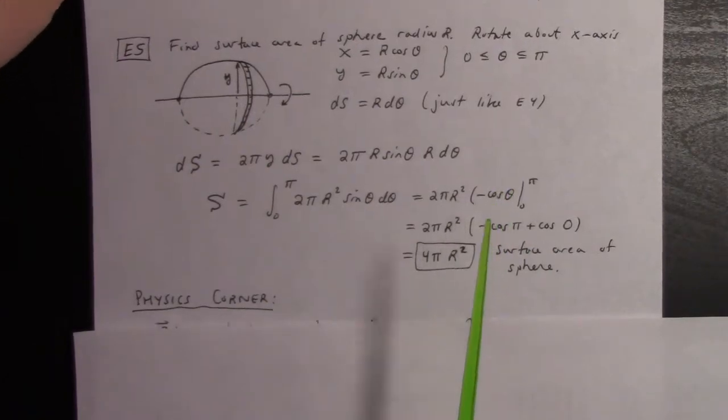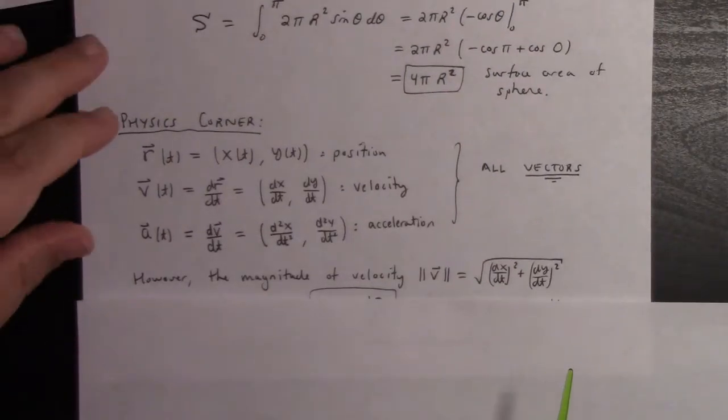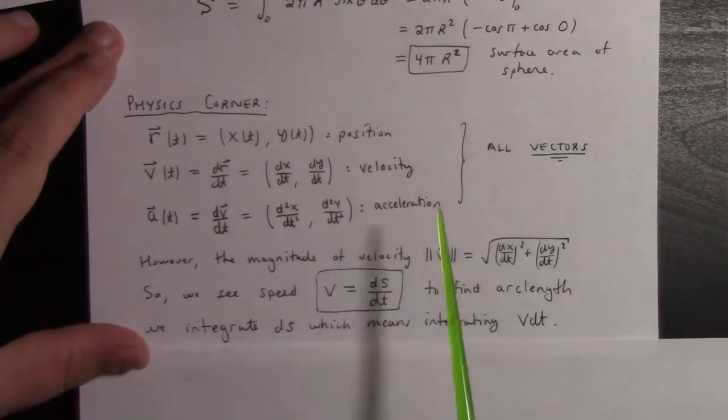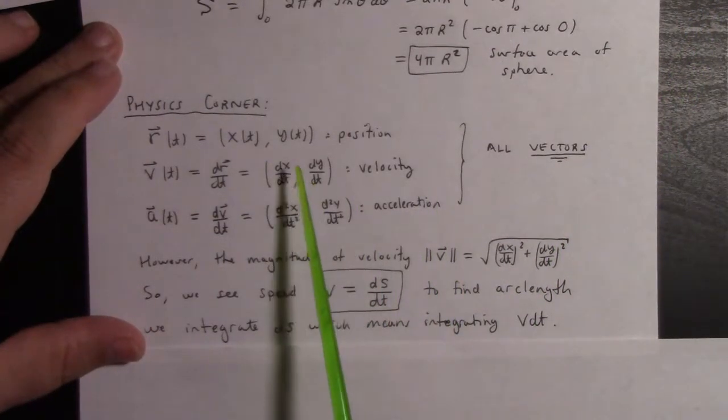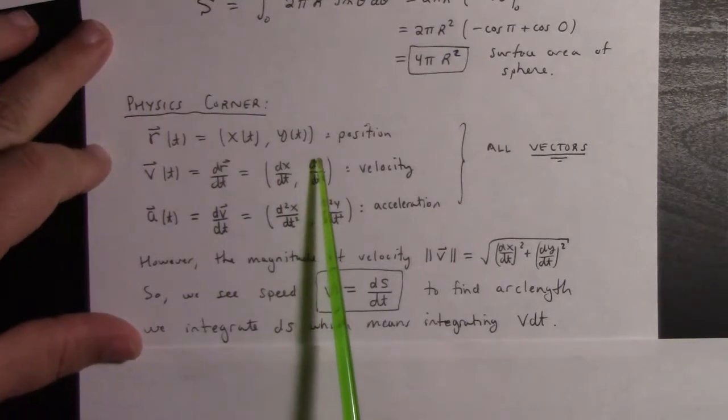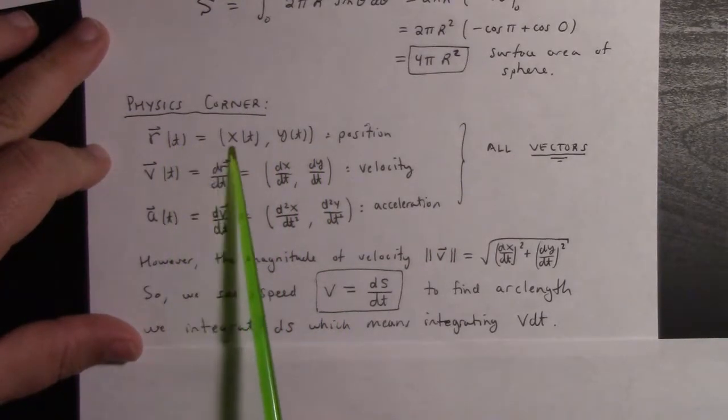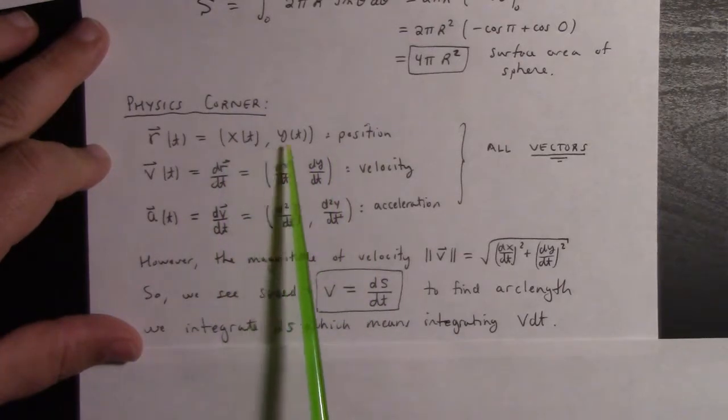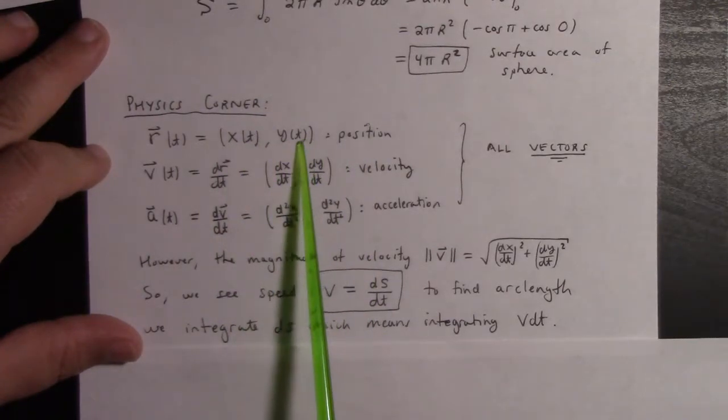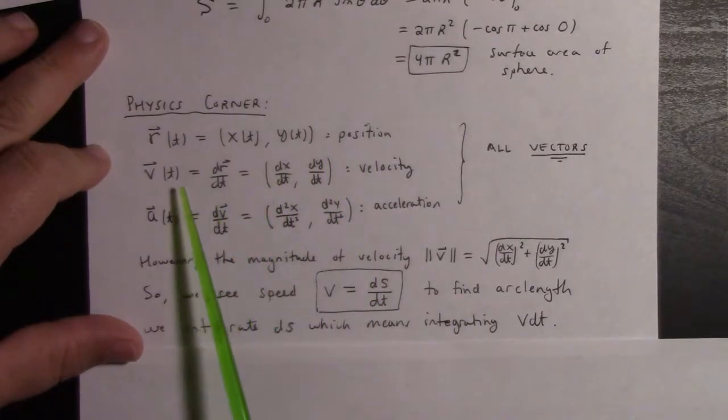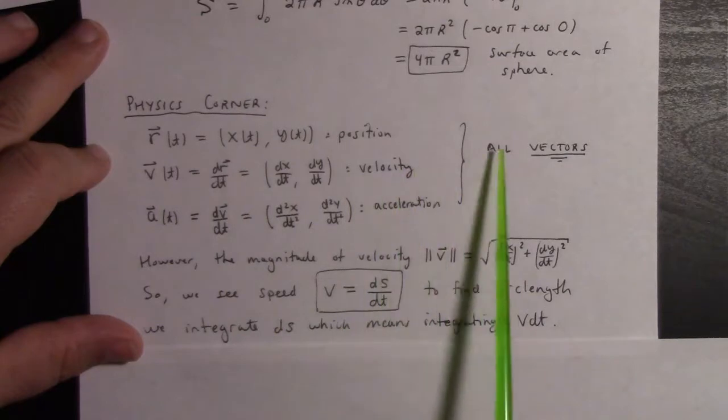By the way, many of you will have to take a course about physics, so we can see a couple things going on here. Just to shout out to physics: for a path, r is the position at time t. If we think of t as being time, then (x(t), y(t)) has physical significance. It's the position of the particle.